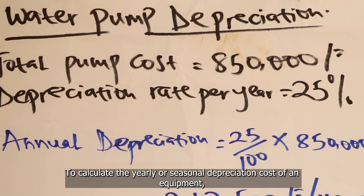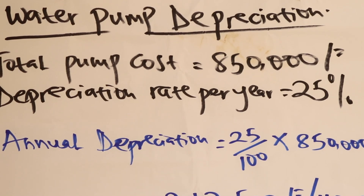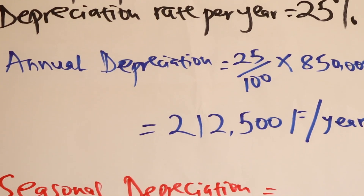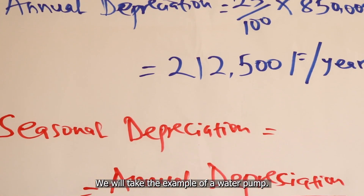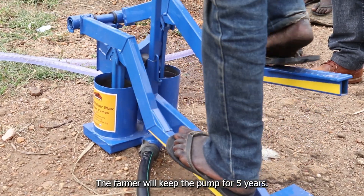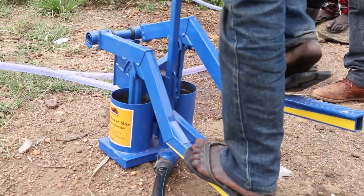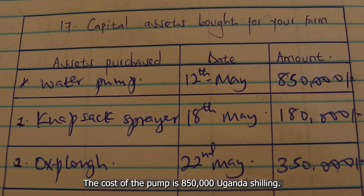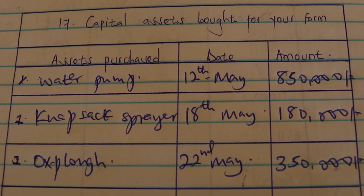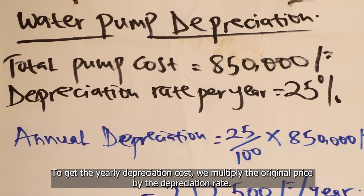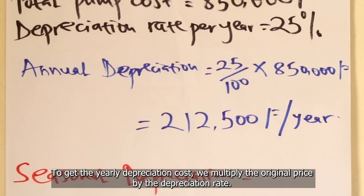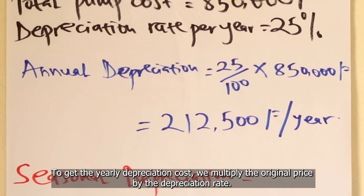To calculate the yearly or seasonal depreciation cost of equipment, decide on how many years the equipment will be used. For example, a farmer will keep a water pump for five years. The cost of the pump is 850,000 Uganda shillings.